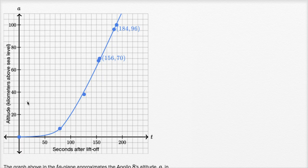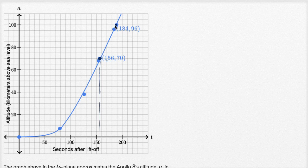They want to know how many kilometers per second was Apollo 8 traveling between 156 and 184 seconds after liftoff. They've labeled those points for us. This point tells us the altitude of Apollo 8 at 156 seconds — the T coordinate is 156 — and this tells us the altitude at 184 seconds, which is 96 kilometers. At 156 seconds, it's 70 kilometers.